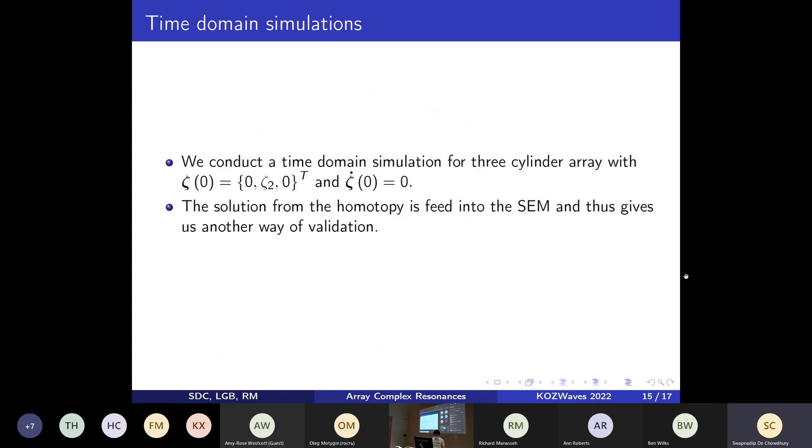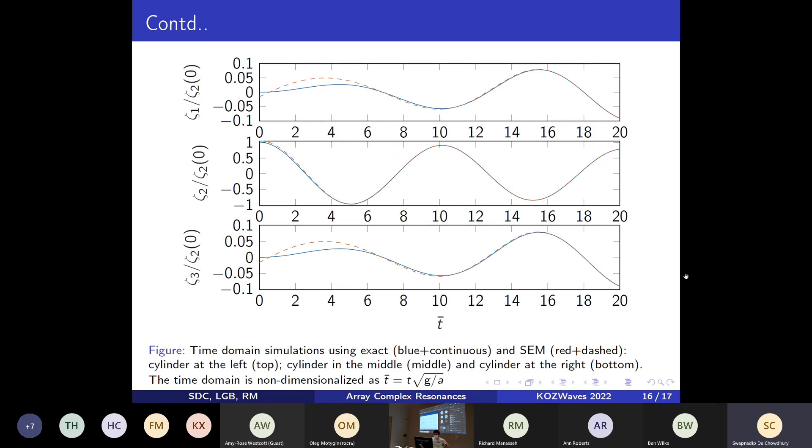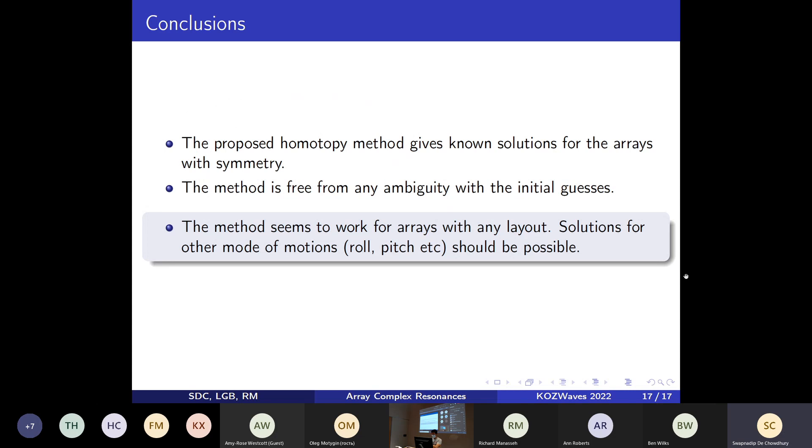Lastly, we conduct time domain simulations using the three cylinders case, where we provide some initial displacement on the cylinder in the middle. We want to use the full solution from this new method based on homotopy and fit that into the SEM to see how reliable the solutions are. When we compare this time-dependent motion for all three cylinders, the results are consistent with the features we generally see from the approximation based on the SEM. Since we are neglecting all the contributions from the branch cut, the match is better as time progresses.